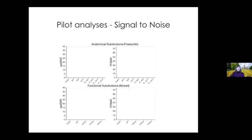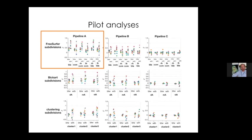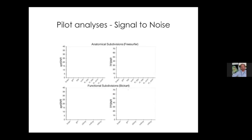In response to a question: the pilot subjects were 10 neurotypical adults, around 33 years old.